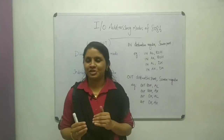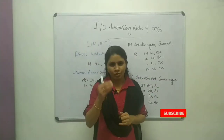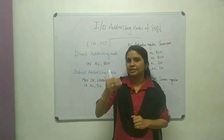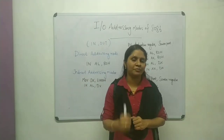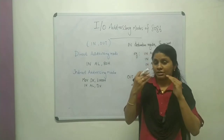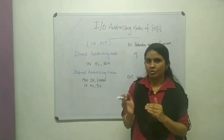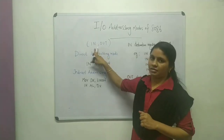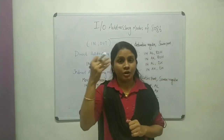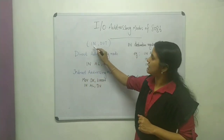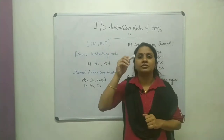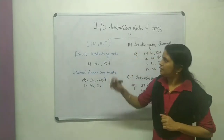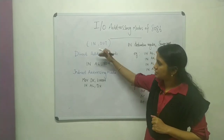Welcome to this session where we discuss input/output addressing modes of 8086. This topic comes under data transfer instructions in 8086. The opcode for representing the input operation is IN, and the opcode for representing the output operation is OUT. These IN and OUT instructions are used in 8086 to represent input/output operations. I/O addressing mode supports direct addressing and indirect addressing mode.